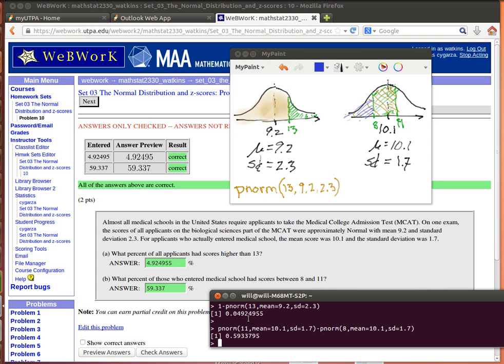Here I've already done that calculation in R. There I'm calculating that brown area. But what I really want is the green area because they're asking us, what percent of all applicants had a score higher than 13? So what I really need to do is take 1 minus that brown area. So that's going to give us this fraction. The fraction 0.0492.